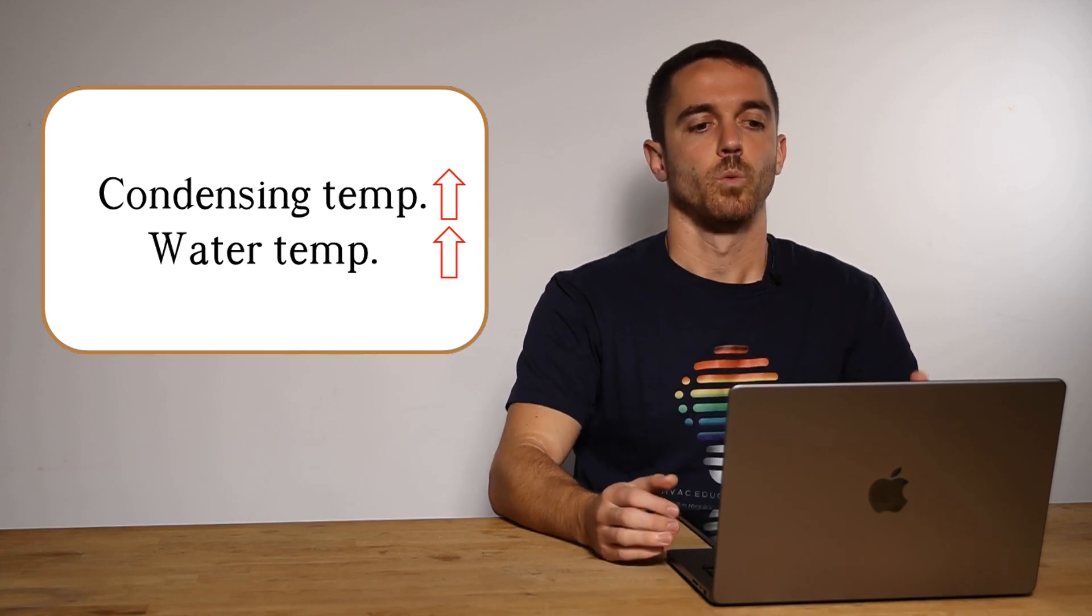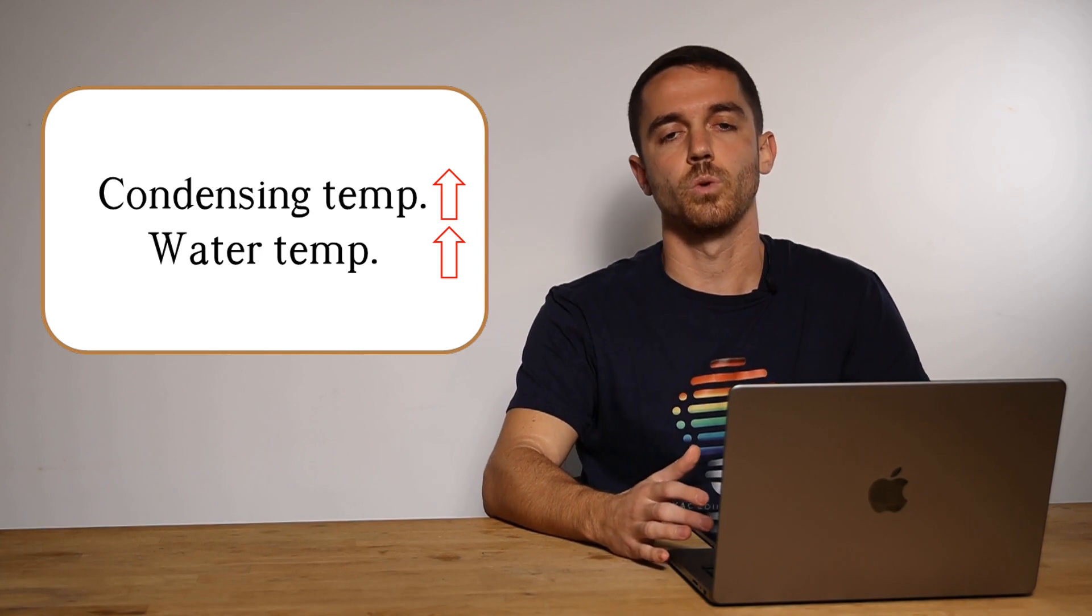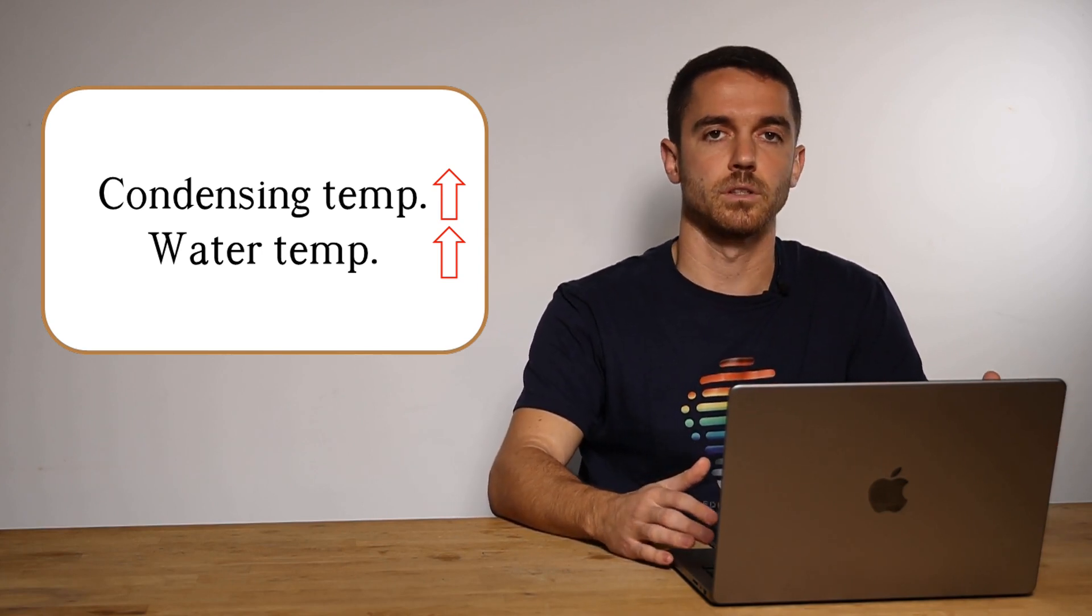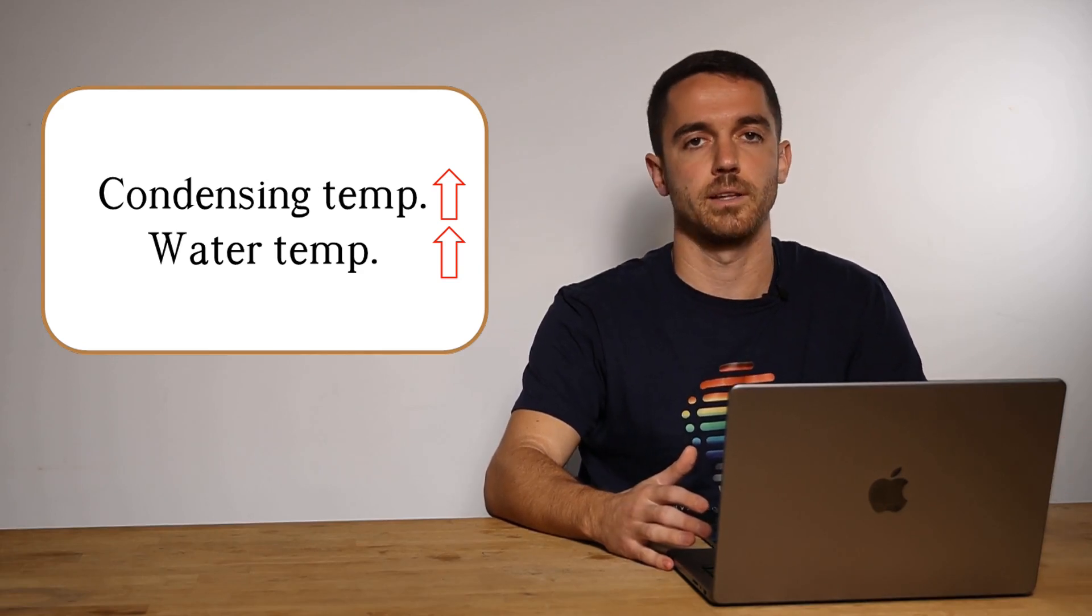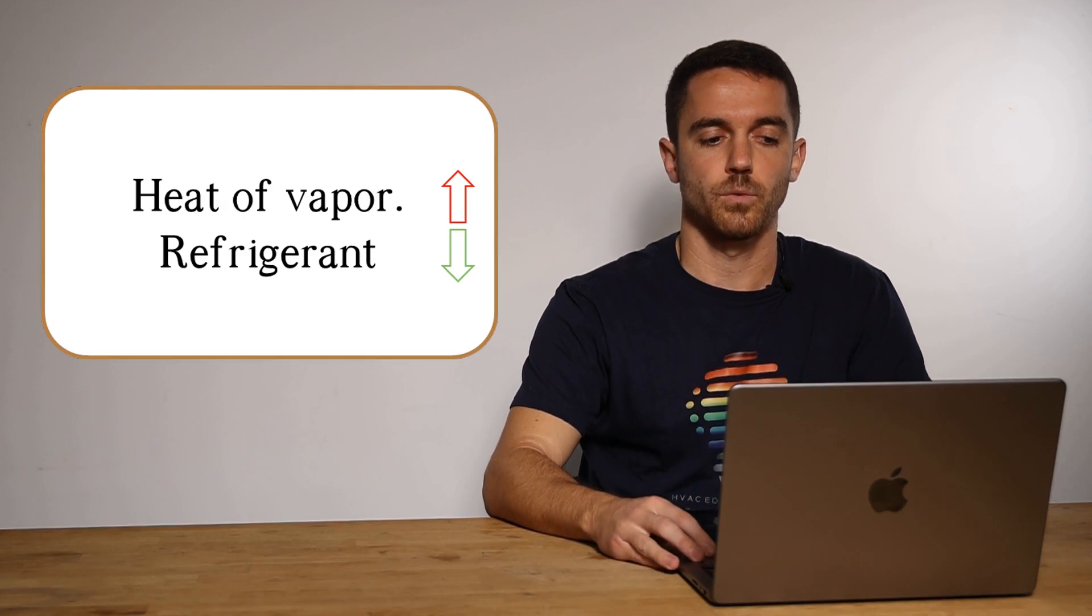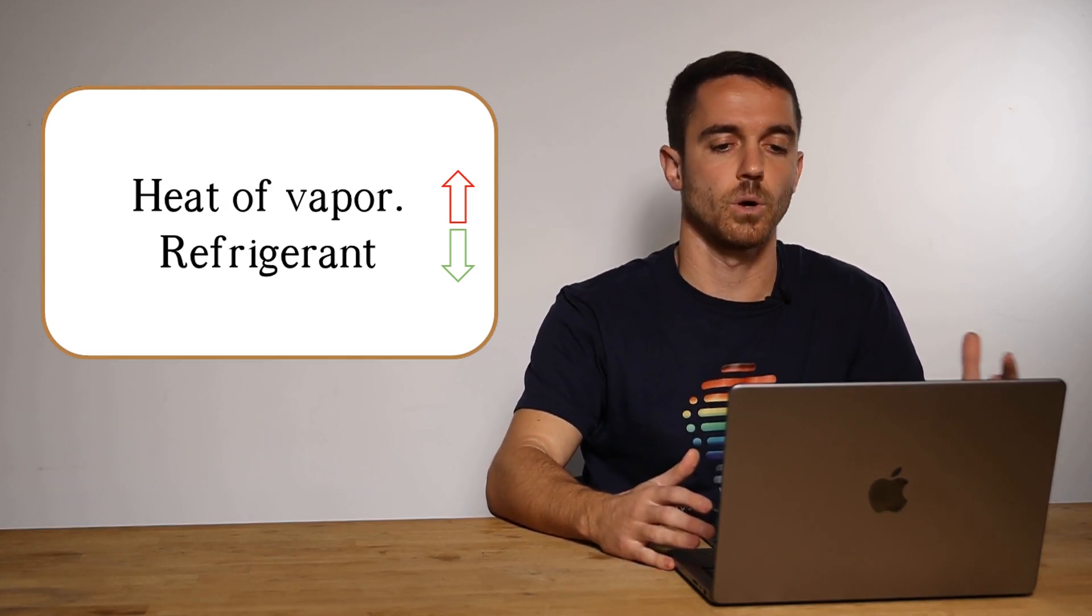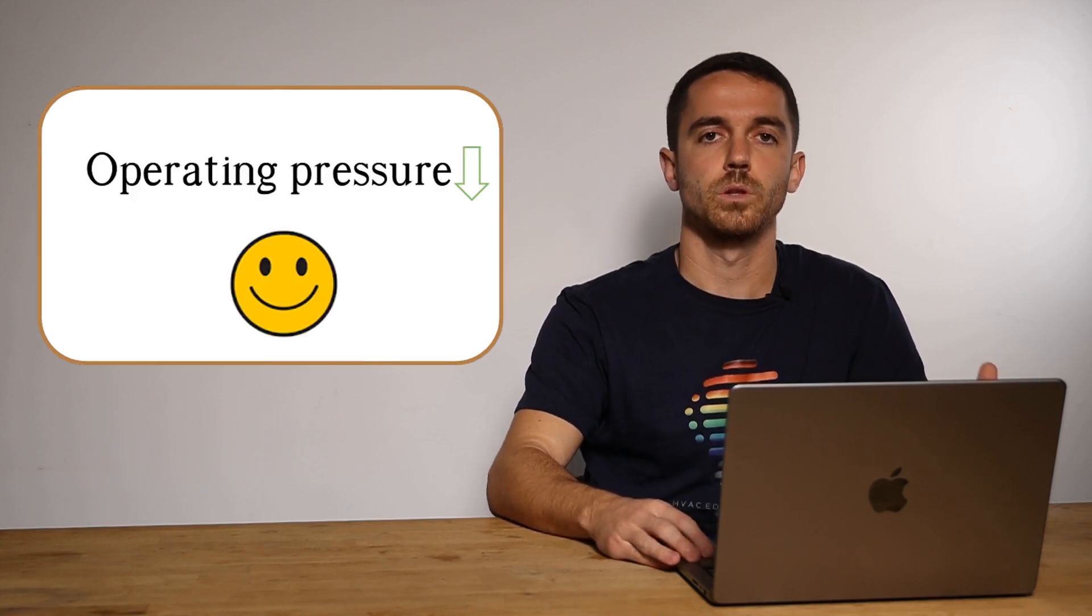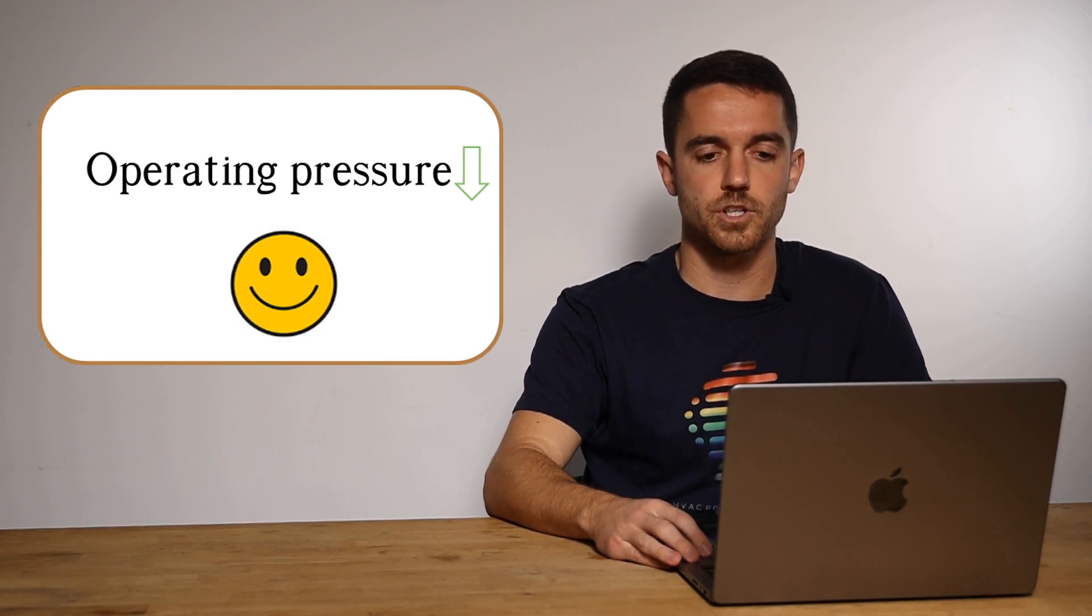So conclusion with higher critical temperature allows our refrigerant to condense at higher temperature. It means higher leaving water temperature. It means higher temperature in our house, in our radiators. Greater heat of vaporization, we can potentially use less refrigerant. So cost-saving, lower CO2 equivalent. And with lower operating pressures, we have safer operation.